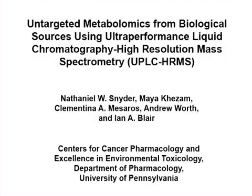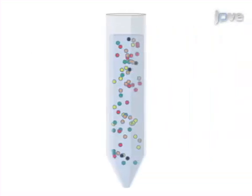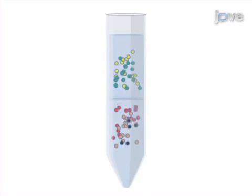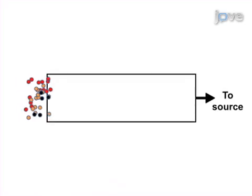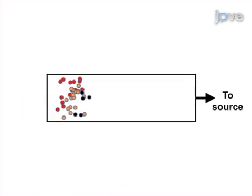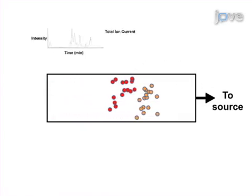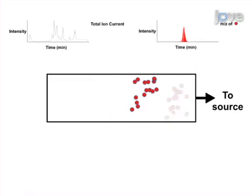The overall goal of the following experiment is to compare snapshots of the metabolic profiles of different groups of biological samples. This is achieved by using a liquid-liquid extraction to separate organic and polar molecules. As a second step, molecules are further separated by liquid chromatography and analyzed by high-resolution mass spectrometry, which provides retention time, mass-to-charge ratio, and intensity data for further analysis.